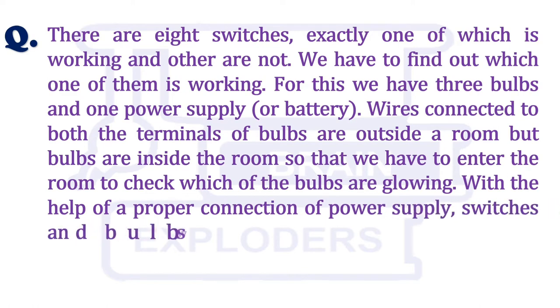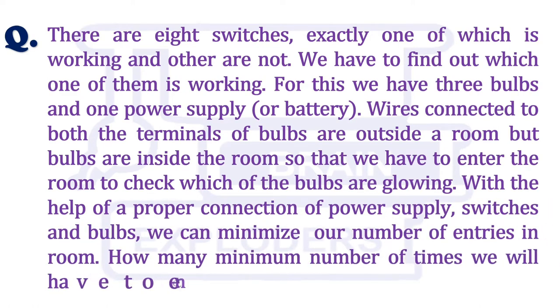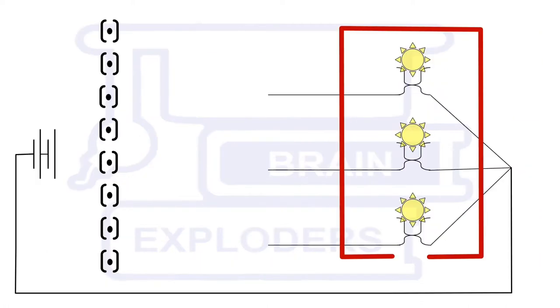Wires connected to both the terminals of bulbs are outside a room, but bulbs are inside the room, so that we have to enter the room to check which of the bulbs are glowing. With the help of a proper connection of power supply, switches and bulbs, we can minimize our number of entries in room. How many minimum number of times we will have to enter the room?